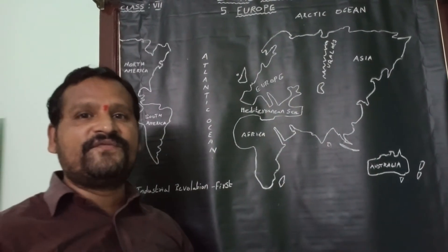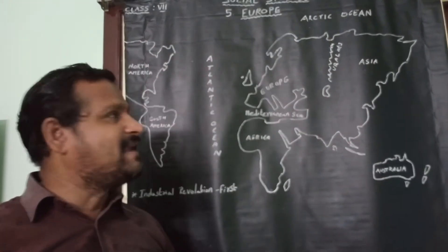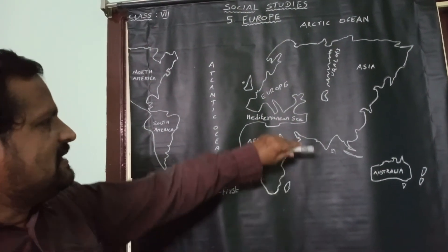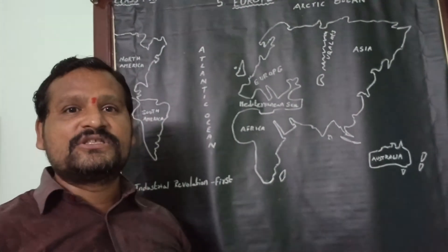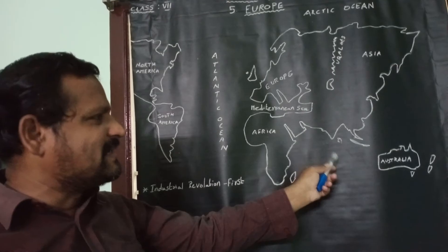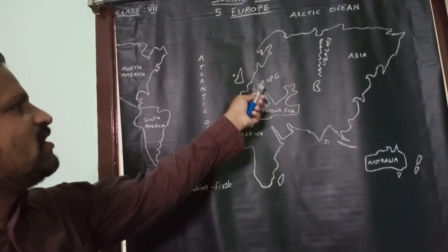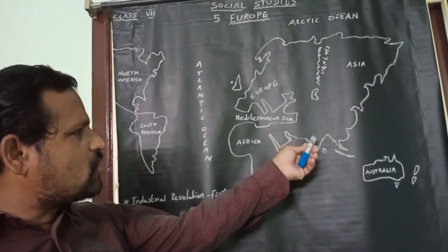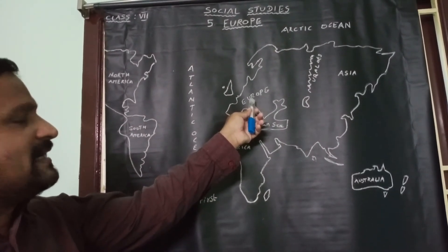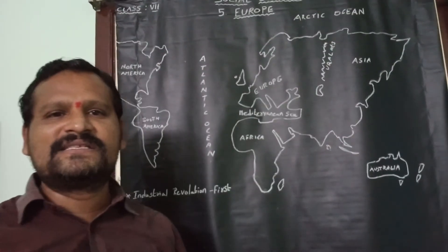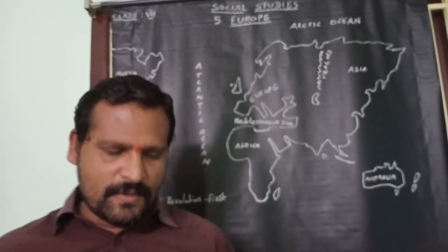Now we will see the distance between India and Europe. India is located at 8-degree latitude, whereas Europe is located at 54-degree latitude. The distance between India and Europe is approximately more than 6,000 kilometers. India is located near the equator, which means India is in the tropical region, whereas Europe is located away from the equator and is in the temperate region.